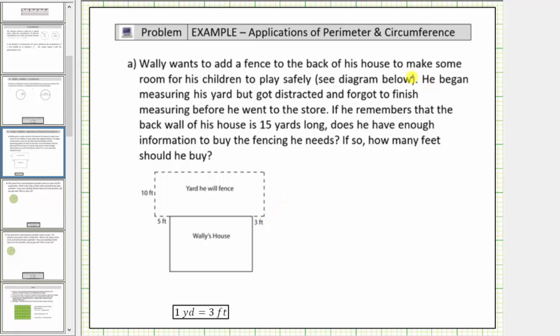He began measuring his yard but got distracted and forgot to finish measuring before he went to the store. If he remembered that the back wall of his house is fifteen yards long, does he have enough information to buy the fencing he needs? If so, how many feet should he buy?